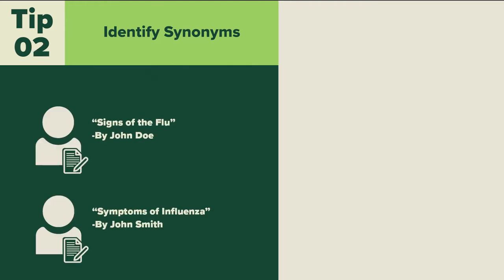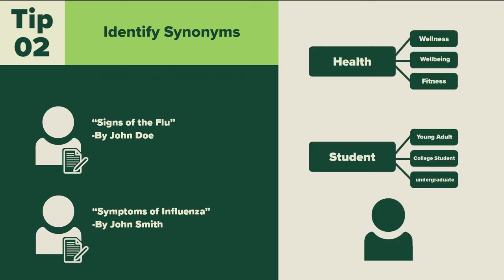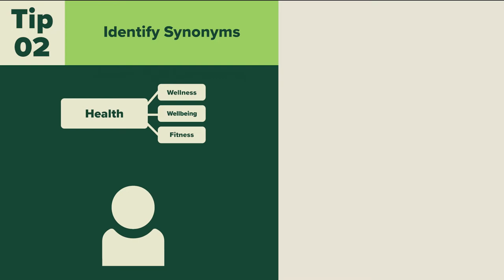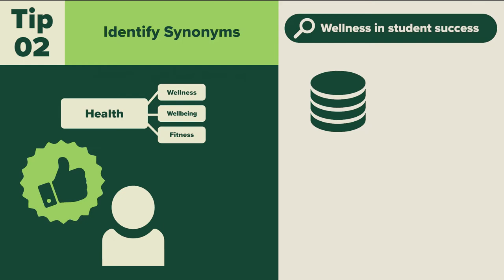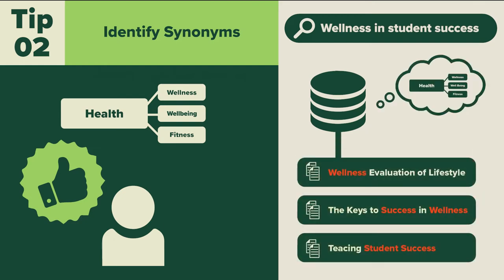Not all authors use the same words to describe the same ideas. It can be advantageous for you to think about a couple of different ways your topic or research question can be described. For example, health and wellness could also be described as 'well-being' or 'fitness.' A search engine or database will specifically search for the terms you typed in and will not necessarily know to include results with synonyms.